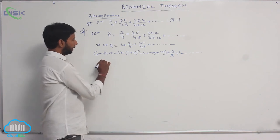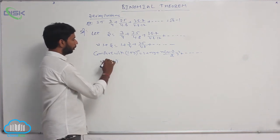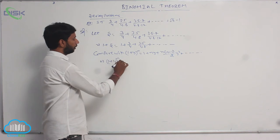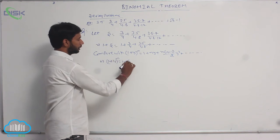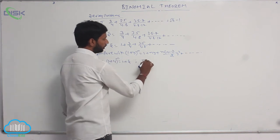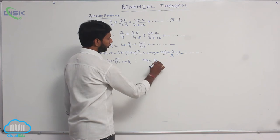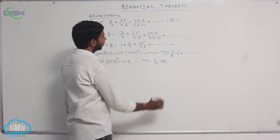That implies (1 + y)^n = 1 + S. From the comparison, ny = 3/4 — this is condition number 1.